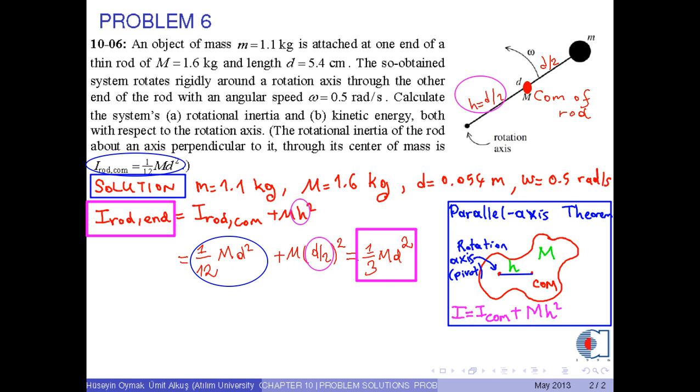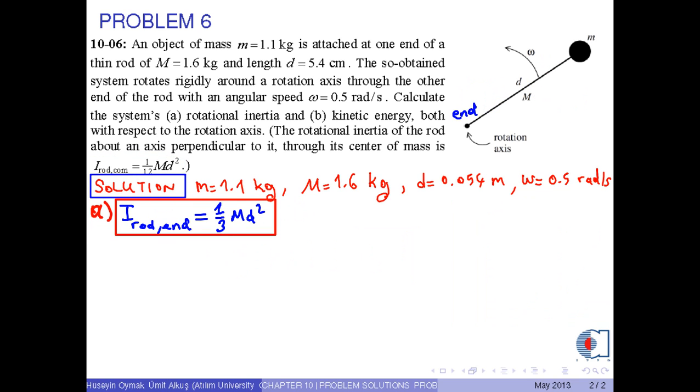Thus, the system's rotational inertia is just the sum of the rotational inertia of the rod with respect to the rotation axis and the rotational inertia of the small m with respect to the rotation axis that is M times d squared.